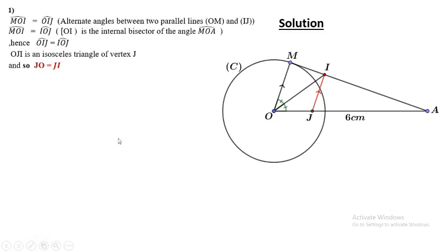Solution: First, let's look at the drawing together. This angle equals this angle, alternate angles. MOI and J form letter Z, and we all know alternate means letter Z. Also, this angle equals this angle because OI is the internal bisector. Consequently, these two angles are equal. If these two angles are equal, this triangle is isosceles with vertex J.